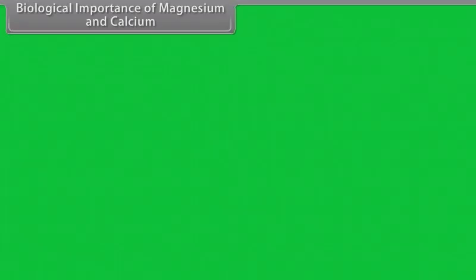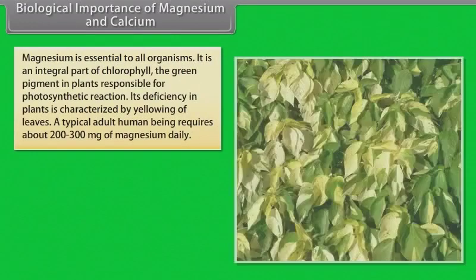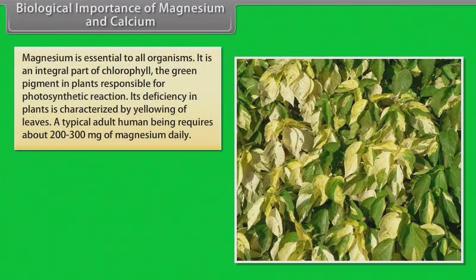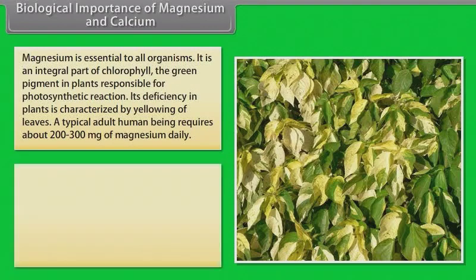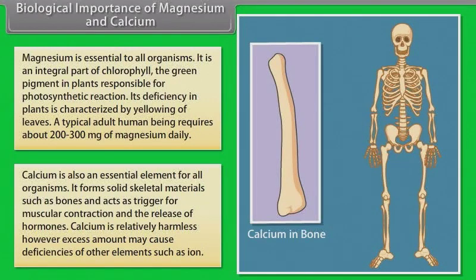Biological importance of magnesium and calcium. Magnesium is essential to all organisms. It is an integral part of chlorophyll, the green pigment in plants responsible for photosynthetic reaction. Its deficiency in plants is characterized by yellowing of leaves. A typical adult human being requires about 200 to 300 mg of magnesium daily. Calcium is also an essential element for all organisms. It forms solid skeletal materials such as bones and acts as trigger for muscular contraction and the release of hormones. Calcium is relatively harmless. However, excess amount may cause deficiencies of other elements such as iron.